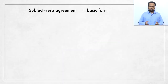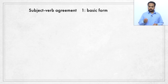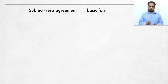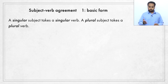So what is subject-verb agreement? Well, you know that every English sentence has a subject and a verb. Subject-verb agreement means the subject and the verb must be in the correct form. This is the rule: a singular subject takes a singular verb, a plural subject takes a plural verb.